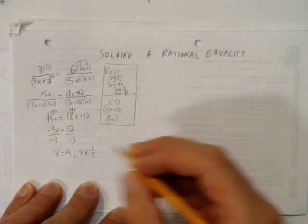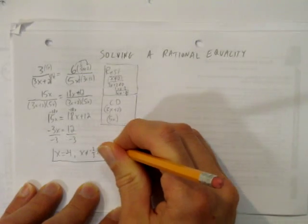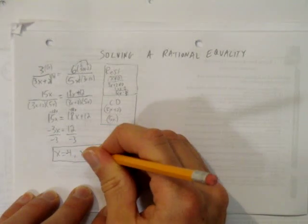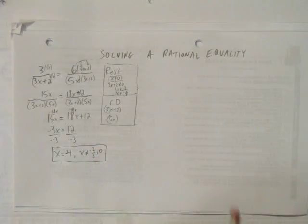So we'll write those in numeric order. We know what x is, but we went back and stated our restrictions just in case. x equals negative 4, and our restrictions were throughout the whole time, that x cannot be negative 2 thirds and x could not be 0.